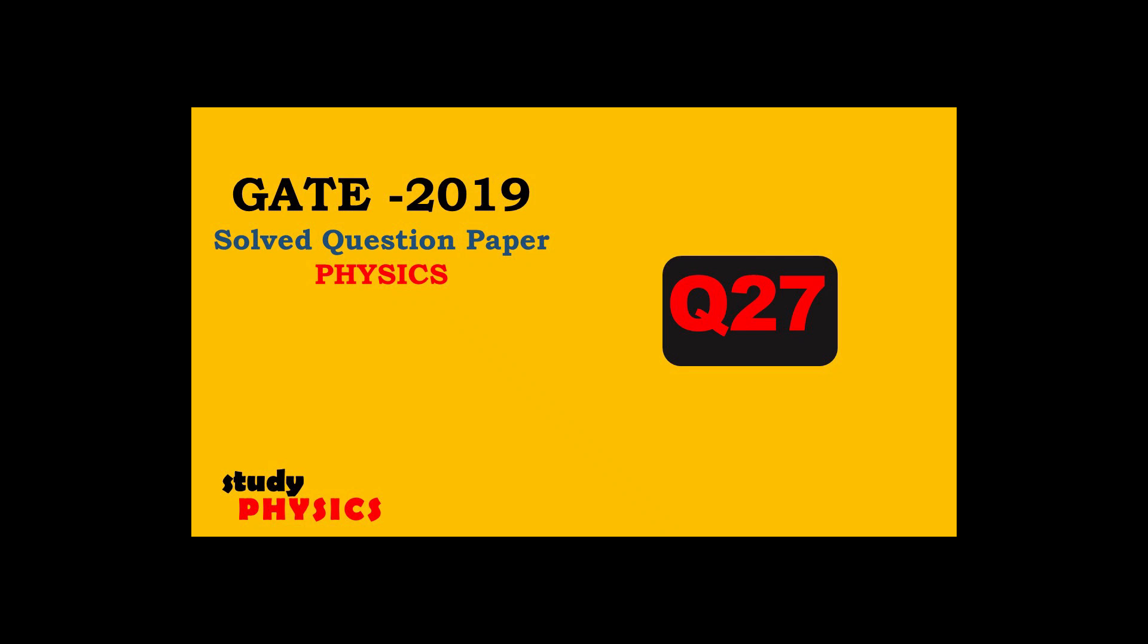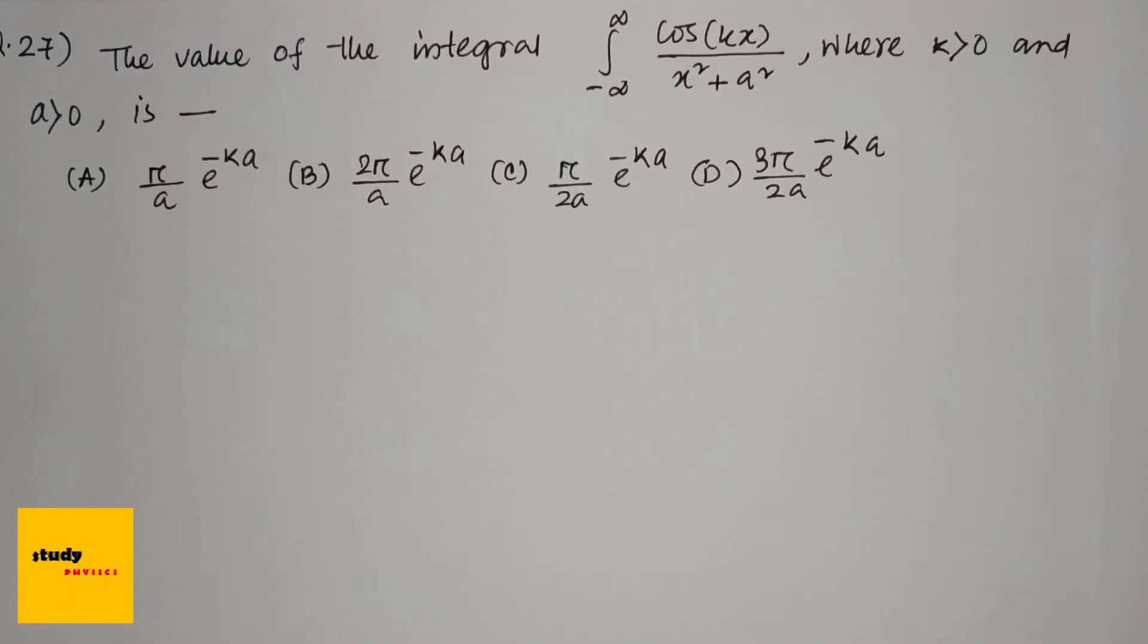Hi everyone, welcome to Study Physics. Here is question number 27: The value of the integral from minus infinity to plus infinity of cos(kx)/(x² + a²), where k > 0 and a > 0 is—and these are the four options.